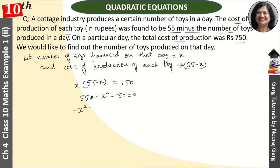So minus x squared plus 55x minus 750, that is equal to 0. As x squared minus 55x plus 750, that is equal to 0.